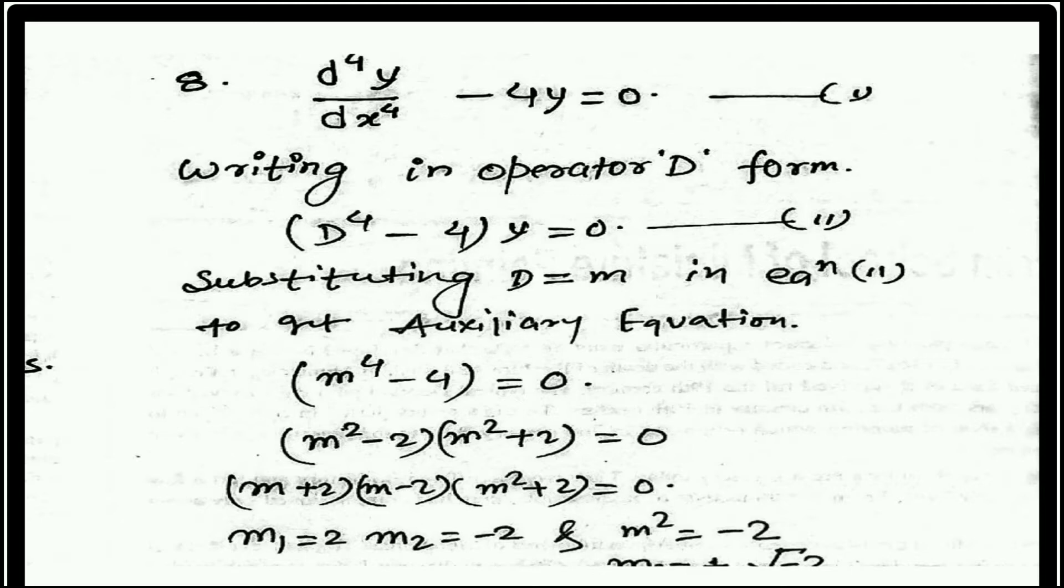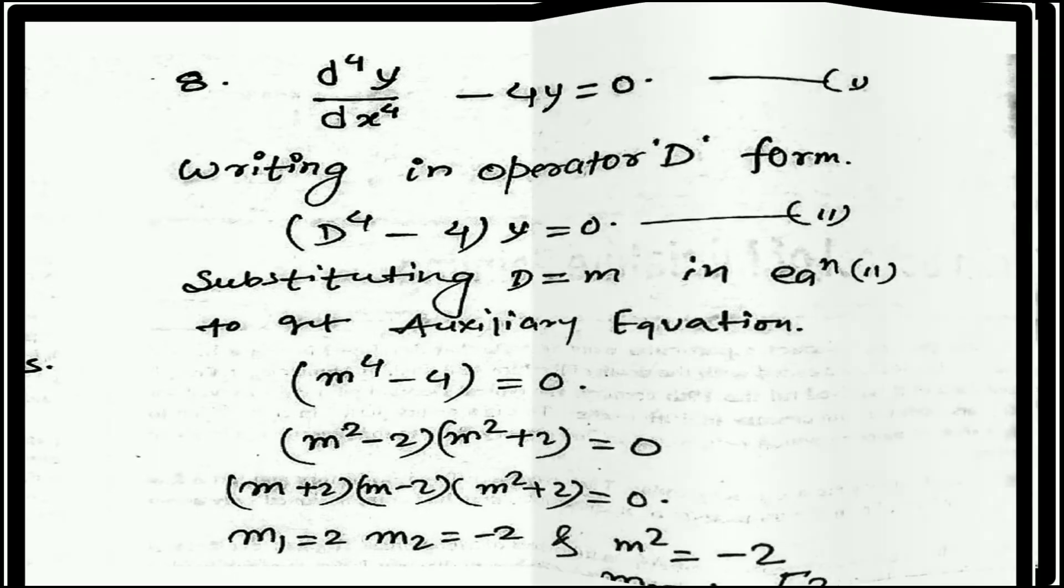Therefore m to the power 4 minus 4 equal to 0. After solving we get (m plus 2) into (m minus 2)(m² plus 2) equal to 0. So there are two real roots and there are two imaginary roots: m₁ equal to 2, m₂ equal to minus 2, and m² equal to minus 2.